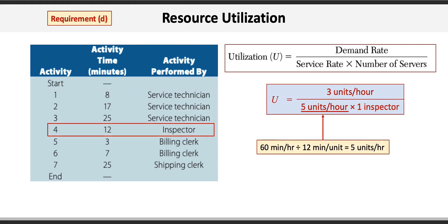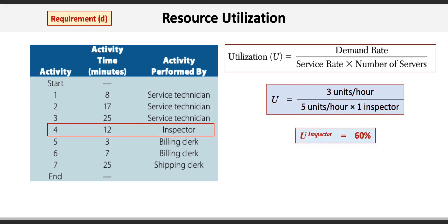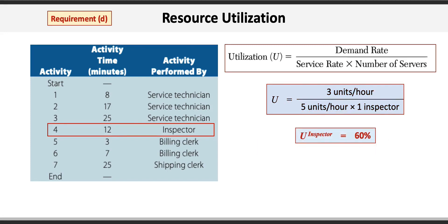Requirement D asks us to identify which job is the bottleneck. But in order to do that, we first need to finish calculating the utilization for the remaining inspector and shipping clerk. The utilization for the inspector is calculated as the 3 unit per hour demand rate divided by the 5 units per hour service rate — calculated as 60 minutes per hour divided by the 12 minute per unit activity time — times 1 inspector. 3 divided by 5 gives an inspector utilization of 60%.